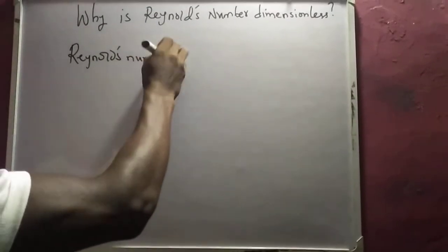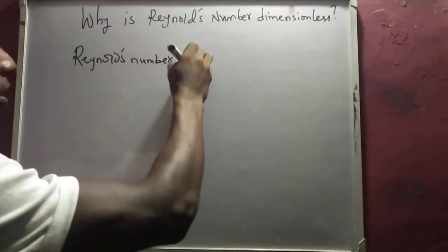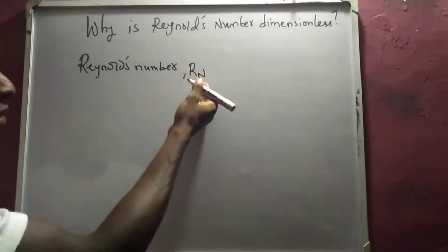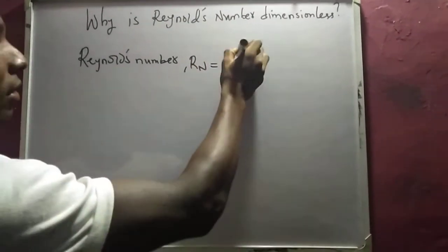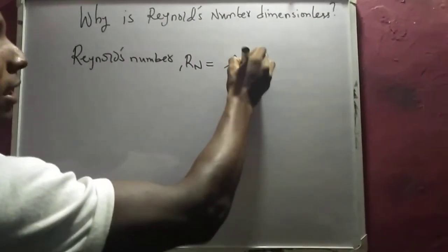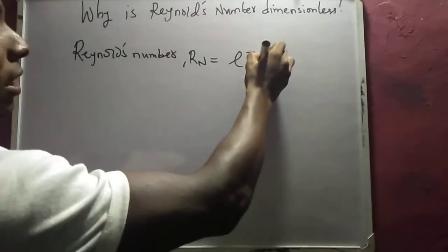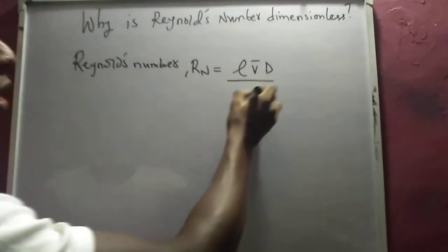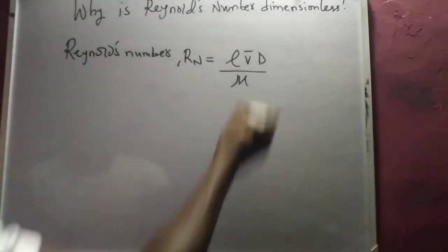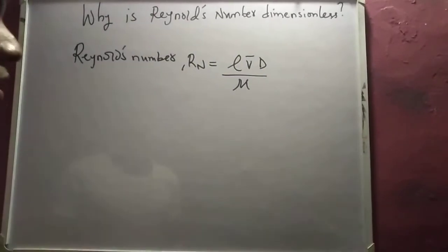...is given by—let's say Reynolds number—it's given by ρ (density) times mean velocity times diameter, all over μ, our dynamic viscosity.